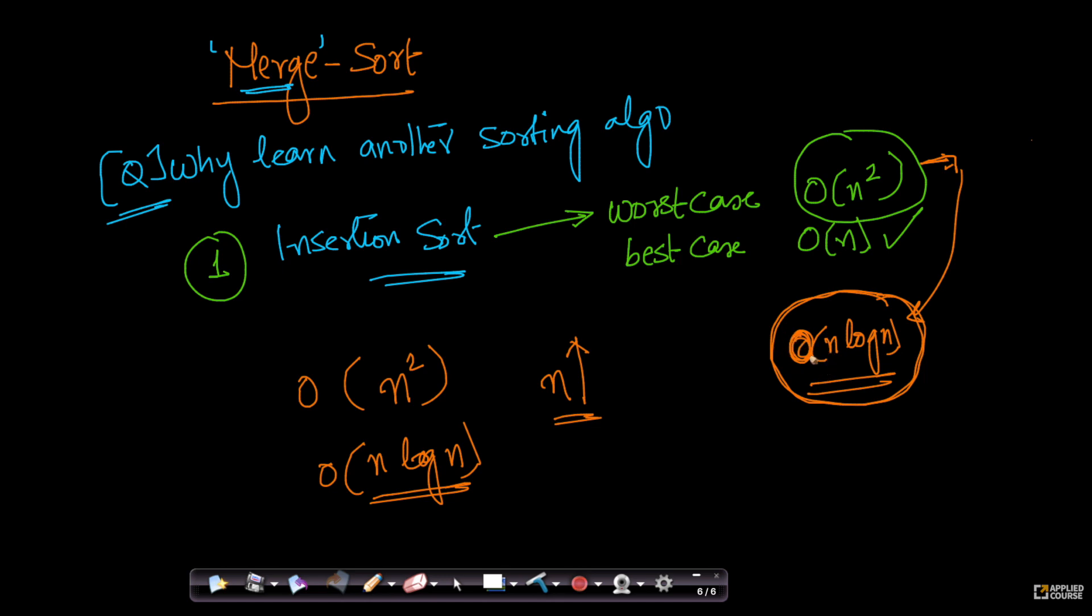If there is an algorithm which is O(n log n), that is certainly better than insertion sort. Because as the size of my input increases, this new algorithm is going to be faster in the worst case. We will show across multiple videos that merge sort's worst-case time complexity is O(n log n), making it faster than insertion sort as array size increases. That's one reason to learn merge sort.